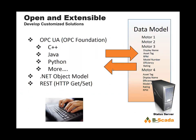What BSCADA has found over time is that once you have this model set up with live data flowing into it, it becomes extremely valuable to an organization. Companies always want to connect to that model with other pieces of software or with custom applications to subscribe to value changes or write information to the model. Because the core of the Status system is an OPC server, you can use OPC foundation libraries to connect to the model in C++, Python, or Java. BSCADA has also developed a .NET object model over top of OPC UA, and you can also use REST to get or set values within the model.